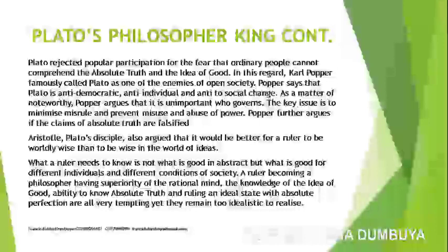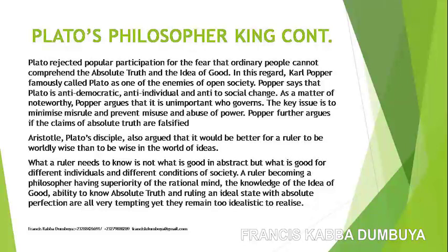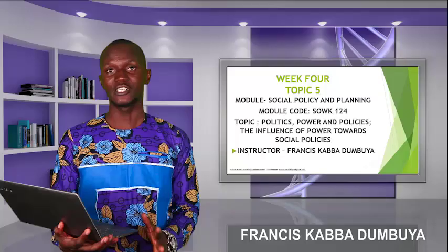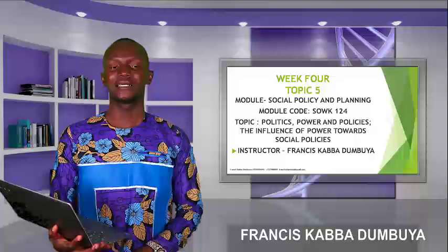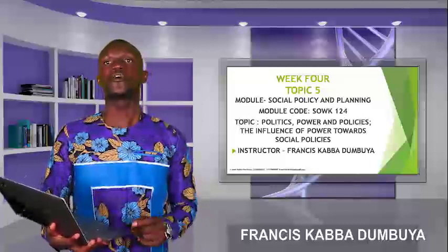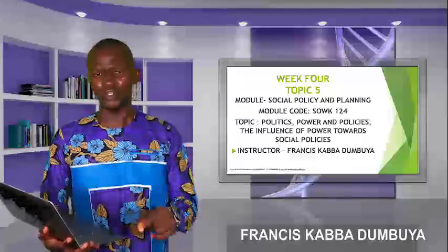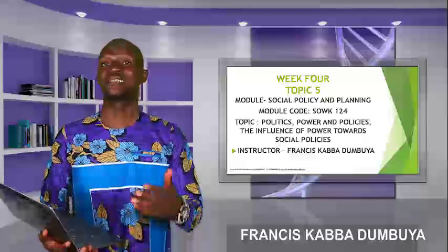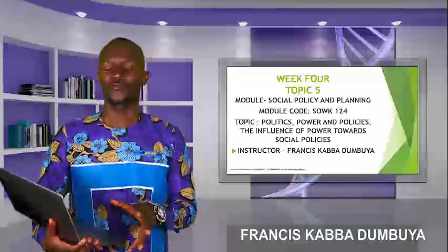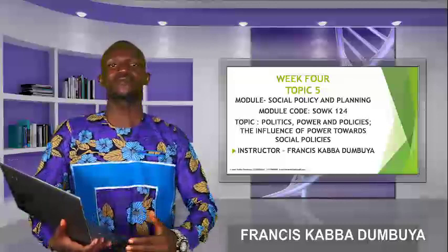According to Plato's disciple Aristotle, it would be better for a ruler to be worldly wise than to be wise only in the world of ideas. The key takeaway from Plato's theory is that politicians should not take things for granted — they should become philosophers, be wise, have knowledge and understanding, and study philosophy before becoming leaders. Or upon assuming office, they must ensure they philosophize. Only then will they be able to succeed. Plato's philosopher king's theory maintains that it is either philosophers become kings, or kings become philosophers, and that is the core of this theory.